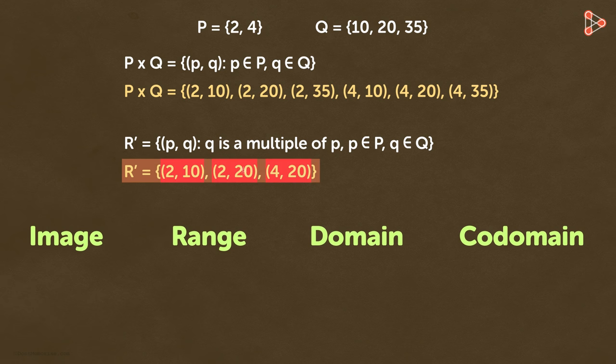Here we can say that 10 is an image of 2, 20 is an image of 2, and 20 is an image of 4. We can say that every q in set R' is an image of its p.